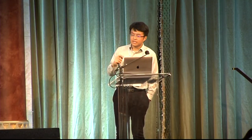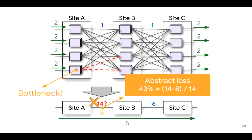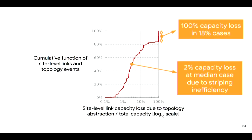However, failures can easily happen. If two links go down, we can no longer model this as the sum of all capacity from the super node level, because you will cause severe congestion where the bottleneck is the bottom router at the source site A. In fact, you can only admit 9 units of capacity in your abstract topology to avoid congestion—a 43% loss due to topology abstraction. Capacity asymmetry is unavoidable: despite planning for perfect symmetry, asymmetry can still happen due to inefficient striping, causing 2% capacity loss at the median. In the tail case, we see 100% capacity loss for 18% of cases, where one super node has completely lost connectivity to the next site.